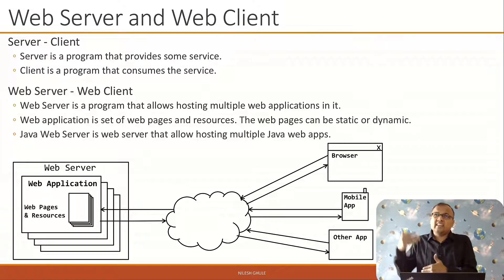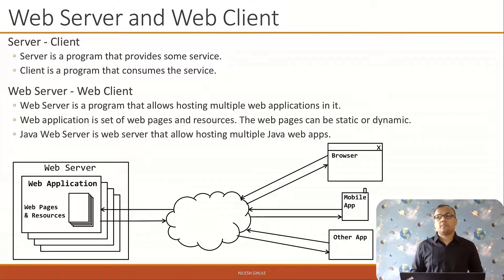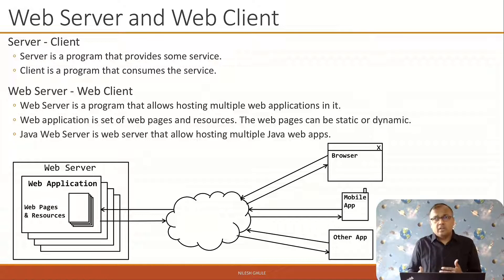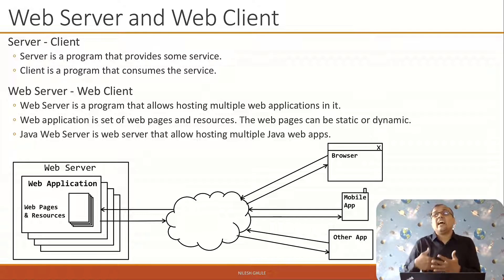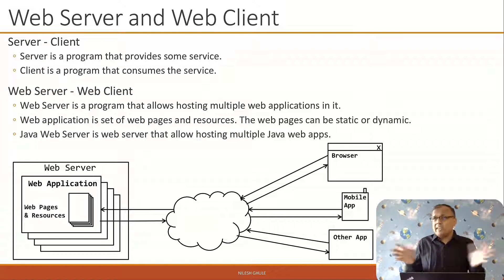As far as Java web servers are concerned, the most popular choice is Apache Tomcat. Web clients are programs which consume web applications. The most common web client is a browser. Nowadays, mobile apps are another prominent client — many mobile applications talk to backend servers to fetch and submit data. Having another application talk to your web application is also very common today.